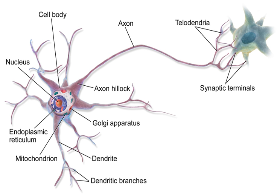The Pacinian corpuscle has concentric layers like an onion, which form around the axon terminal. When pressure is applied and the corpuscle is deformed, mechanical stimulus is transferred to the axon, which fires. If the pressure is steady, the stimulus ends. Typically these neurons respond with a transient depolarization during the initial deformation and again when the pressure is removed, which causes the corpuscle to change shape again. Other types of adaptation are important in extending the function of a number of other neurons.